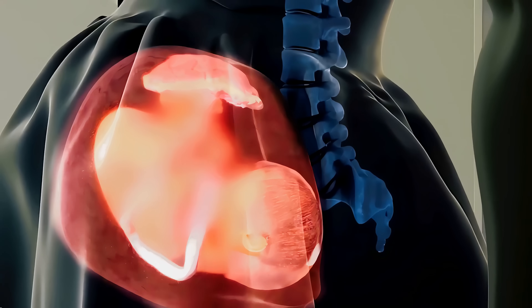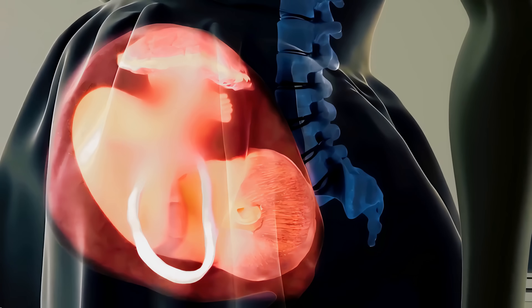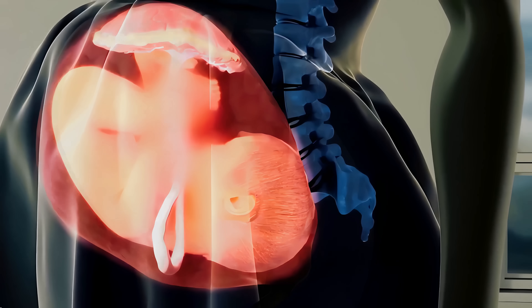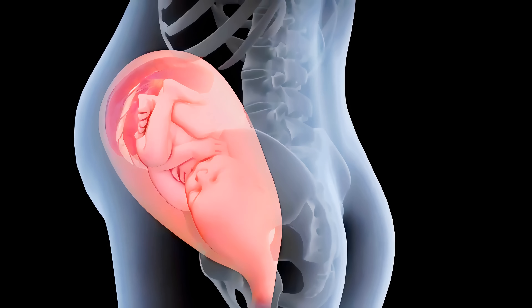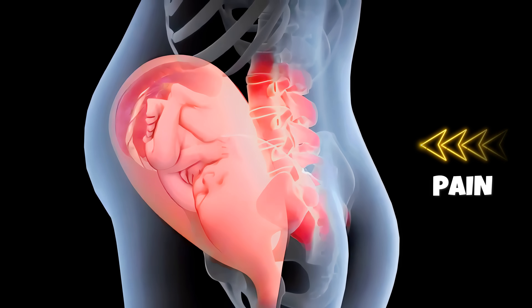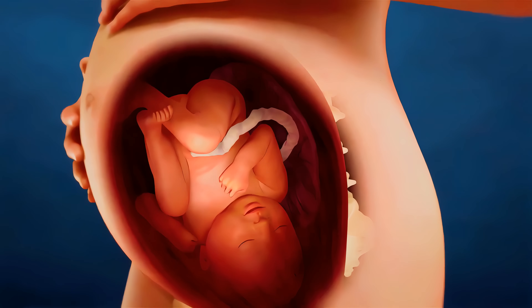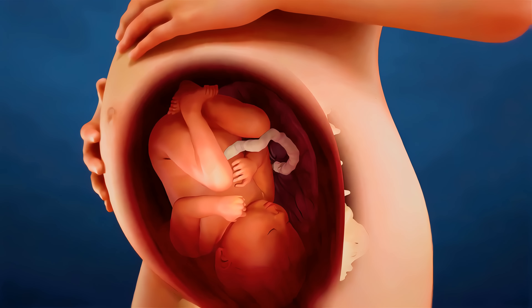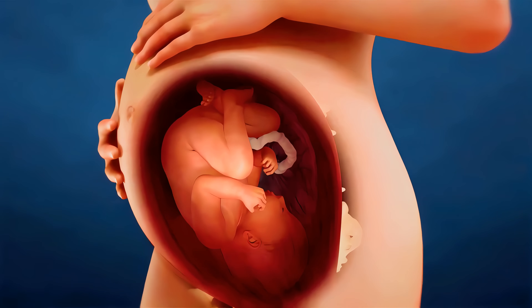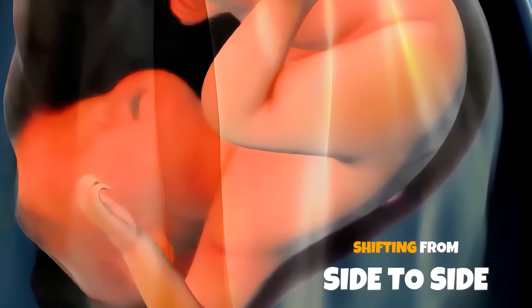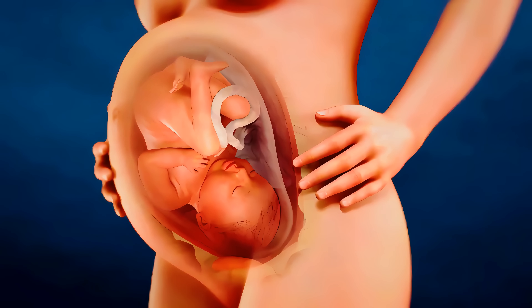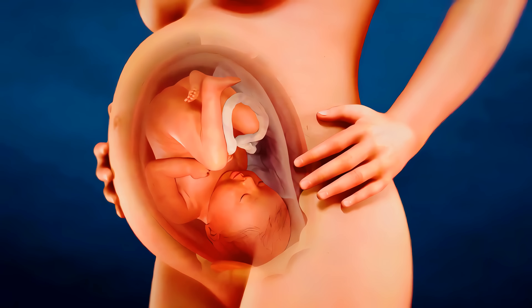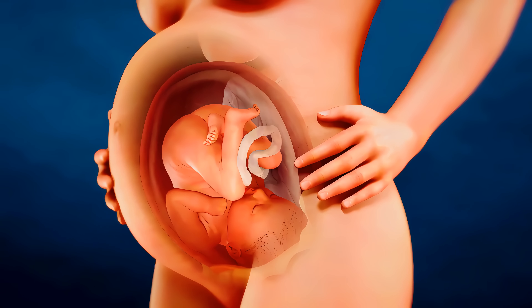As the baby grows larger, the uterus expands. The mother may experience increased discomfort, especially in the lower back, pelvis, and abdomen. In preparation for birth, the baby may start to change position, such as shifting from side to side or rotating within the womb. Most babies settle into a head-down position in the mother's pelvis, with their head closer to the birth canal.